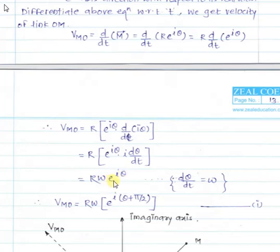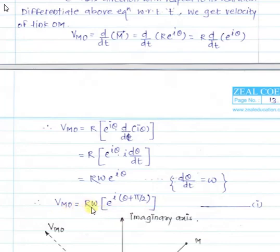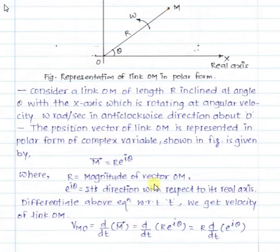In complex number form, i·e^(iθ) equals e^(i(θ + π/2)). Therefore, the velocity of M with respect to O equals R·ω·e^(i(θ + π/2)). This is the velocity vector of link OM derived from its position vector.